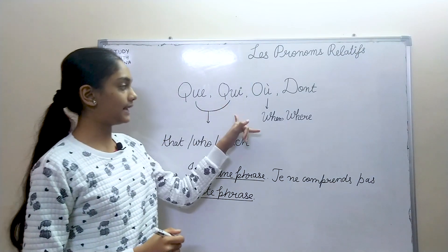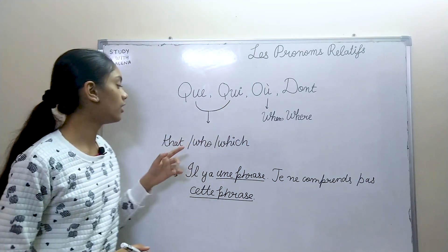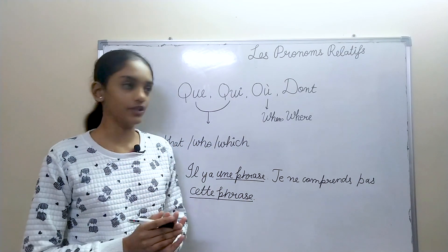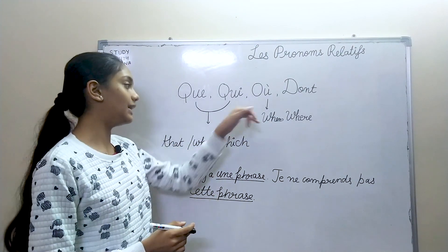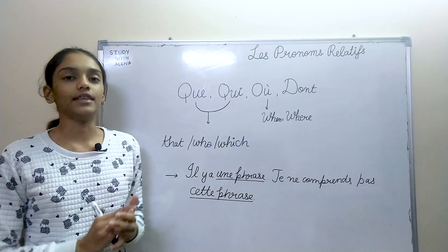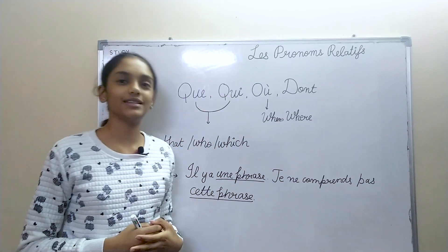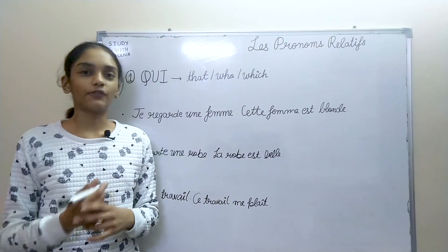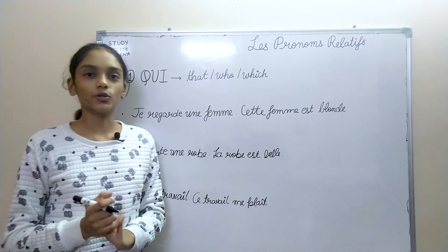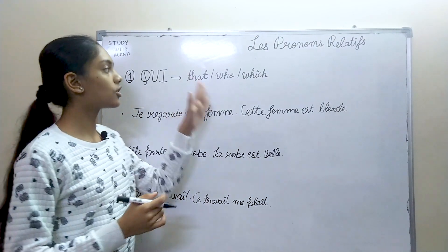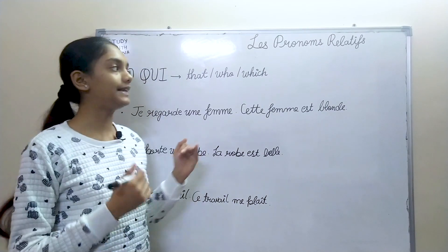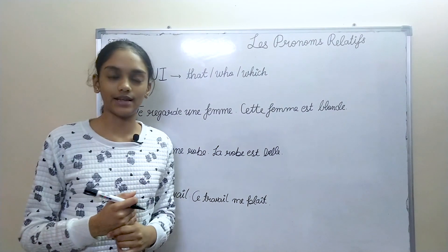Now, qui and que mean 'that', 'who', or 'which', and où means 'when' and 'where'. We'll study the three of them in detail. First, we'll learn about qui. As I told you, qui means 'that', 'who', or 'which'. It takes its meaning according to the sentence.